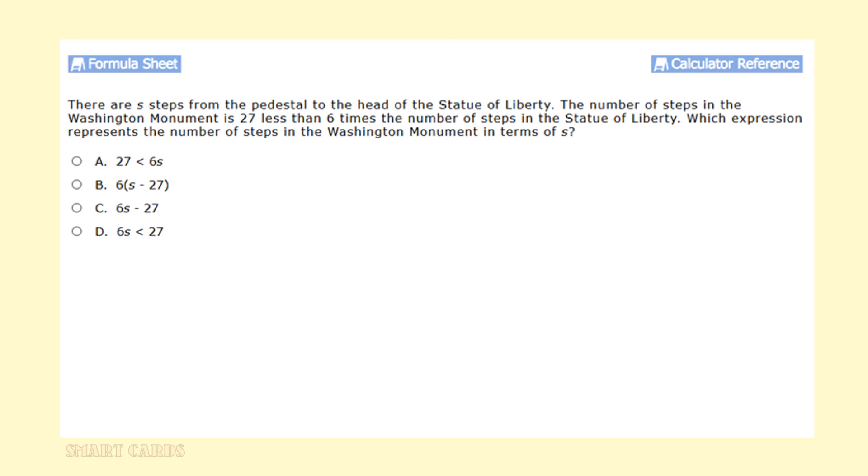There are s steps from the pedestal to the head of the Statue of Liberty. The number of steps in the Washington Monument is 27 less than six times the number of steps in the Statue of Liberty. Which expression represents the number of steps in the Washington Monument in terms of s? Let's look at the two signals in this problem. The Statue of Liberty is s steps from the pedestal to the head. The Washington Monument is six times s minus 27 steps more or less than the Statue of Liberty. So we get a final solution of six s minus 27 or answer option c.